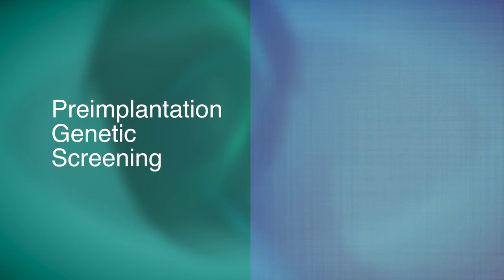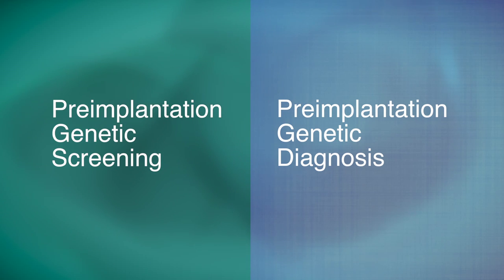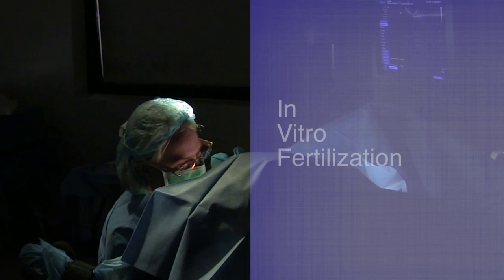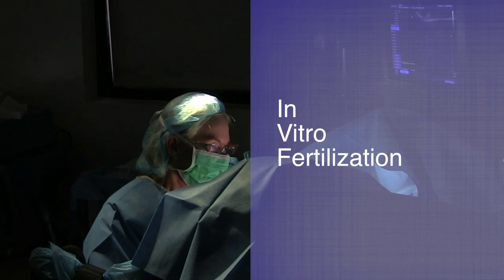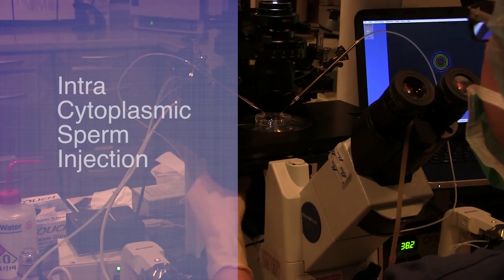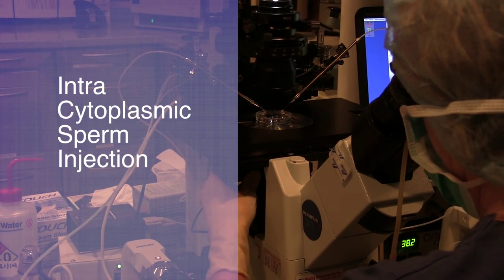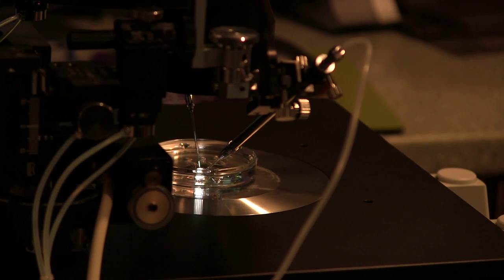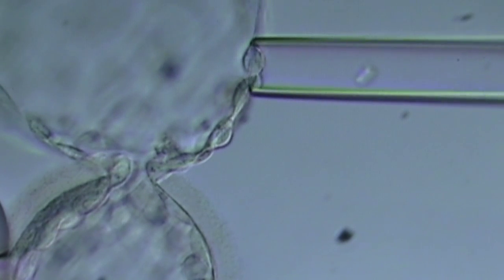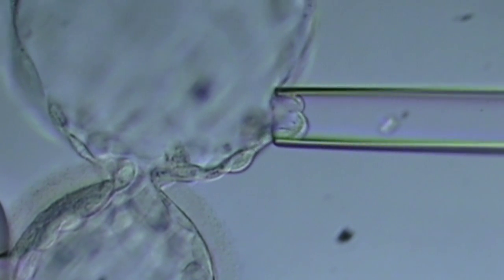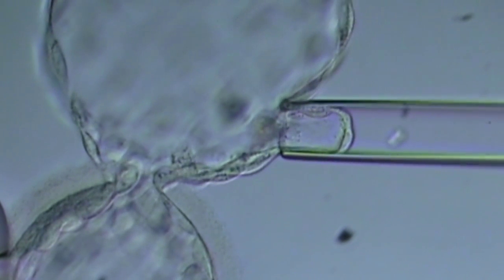In order for PGS and or PGD to be performed, a couple undergoes an in vitro fertilization cycle in order to obtain eggs that are fertilized using ICSI. A highly skilled embryologist then uses a sophisticated microscope setup to biopsy or to extract cells from the outer layer of the embryo called trophectoderm cells.